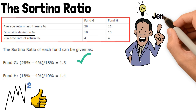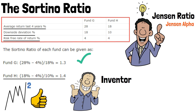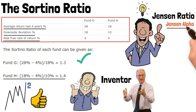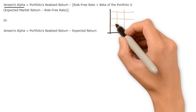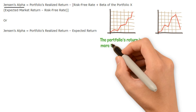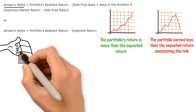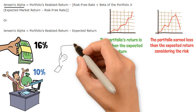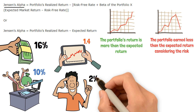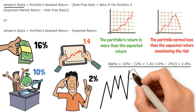Let's look at the third risk-adjusted return ratio, the Jensen Ratio, often called Jensen's Alpha. Just like the two ratios covered before, this one is also named after its inventor, economist Michael Jensen. The aim of Jensen's Alpha is to measure how much an investment returned above or below its expected return, as defined by the Capital Asset Pricing Model, abbreviated CAPM. Jensen's Alpha can have a positive or negative value. A positive value suggests the portfolio return is more than the expected return, while a negative value shows the portfolio earned less than expected, considering the risk. For example, a mutual fund had a return of 16% last year while the relevant market index returned 10%. The fund's beta is 1.4 and the risk-free rate is 2%. Putting the numbers into the Jensen Ratio formula gives a value of 2.8, meaning the fund overperformed on a risk-adjusted basis.